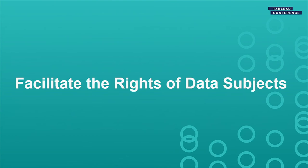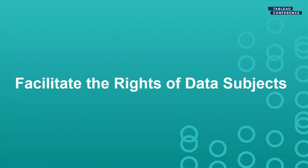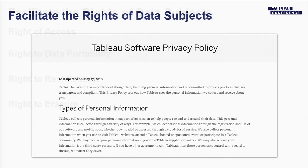Facilitating the rights of data subjects is where things get more complex. Under GDPR, data subjects have four rights. The right to access means they can find out what data you have on them. The right to data portability means they can request a copy of their data in a common machine-readable format. The right to rectification means they can request correction of incorrect data. And the right to erasure — originally called the right to be forgotten — means they can request deletion of all data you have on them.